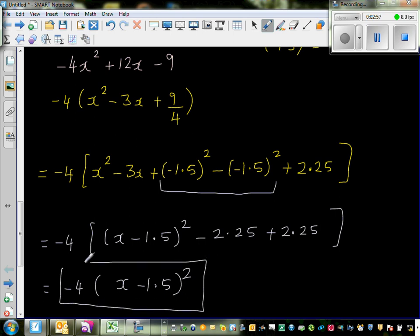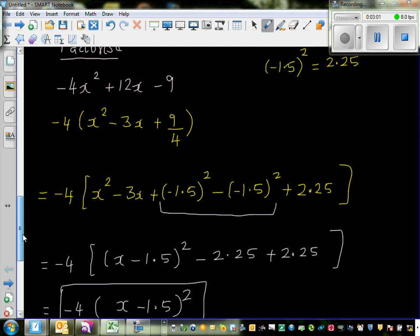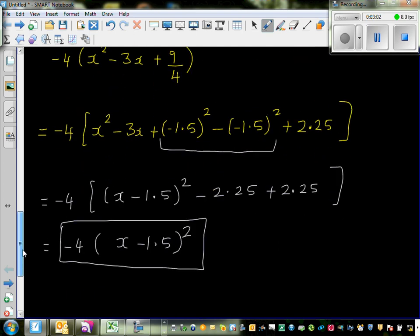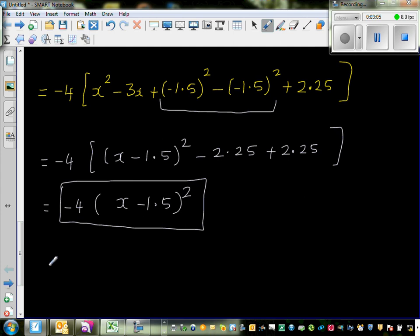This is -4(x - 1.5)². This is the answer. If you want to factorize this into two brackets, this is -4(x - 1.5)(x - 1.5).